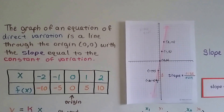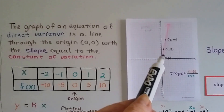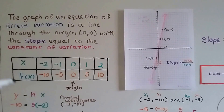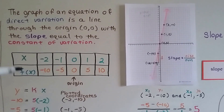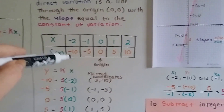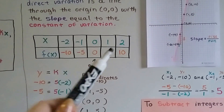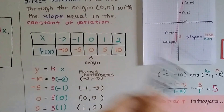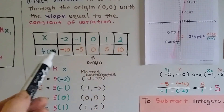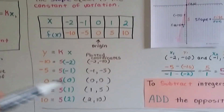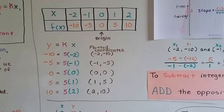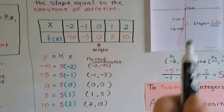The graph of an equation of direct variation is a line through the origin, with a slope equal to the constant of variation. If we put values in a table — x values like negative 2, negative 1, 0, 1, 2 and beyond — we get our plotted coordinates. We can take these and draw a line.